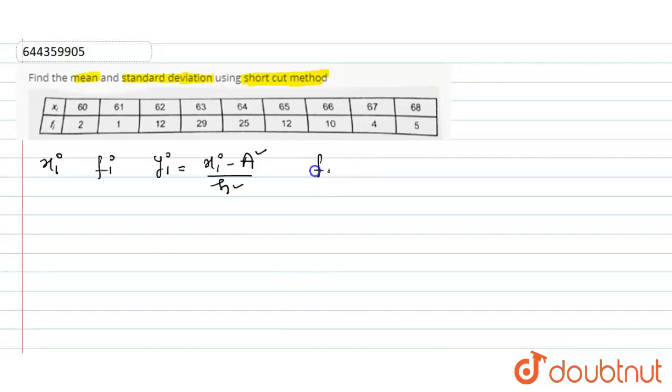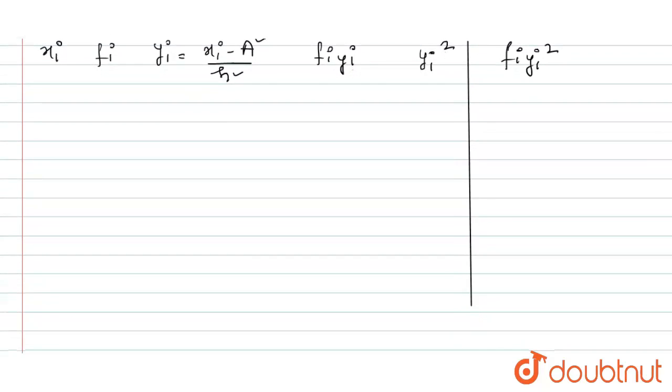fi into yi. Next, after this, after calculation of mean, I need to find the value of the standard deviation. So we need yi square, then fi into yi square. So let me draw the line so that we can calculate accordingly properly.